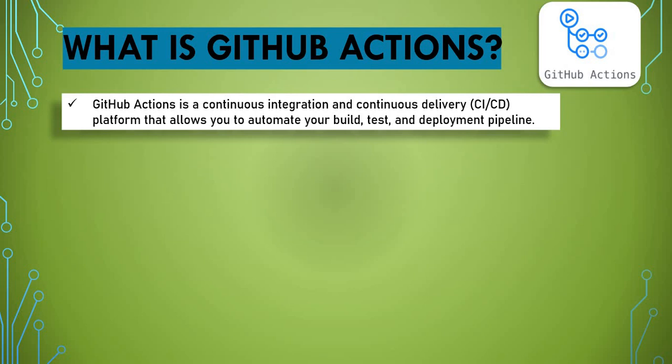We'll cover the components shortly. When you create a GitHub Actions pipeline, you need to know how to create jobs, write your actions, and understand what an event is. This CI/CD pipeline is part of GitHub, so you need a GitHub account to make use of GitHub Actions. If you use Jenkins you write a Jenkins pipeline; if you use GitLab CI you write a GitLab pipeline — similarly, if you have a GitHub repository, you can use GitHub Actions.